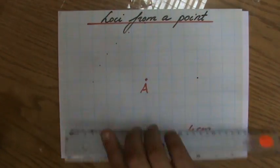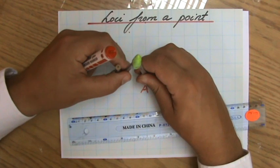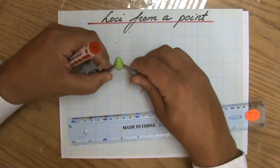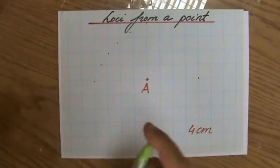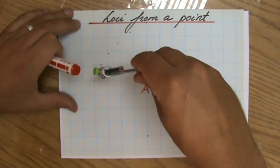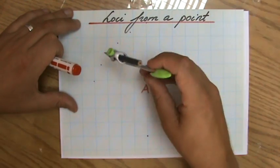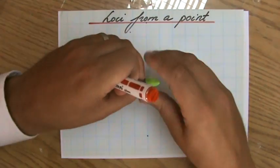You might want to use your ruler to do that, open it to four centimeters. But I have square paper and I say each square is one centimeter. So I open it on four of those squares and I'm going to draw that circle with a radius of four centimeters where A is the center.